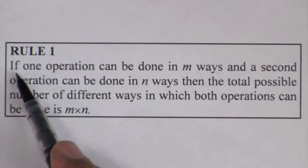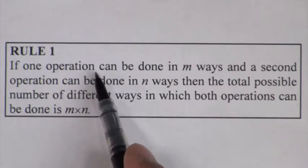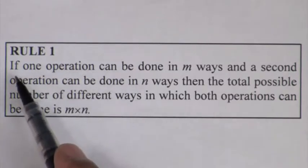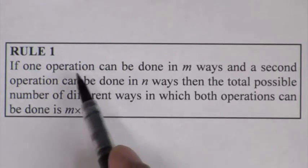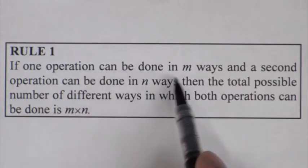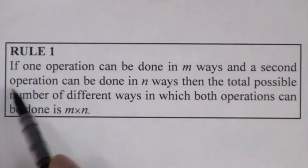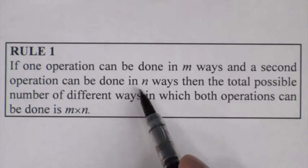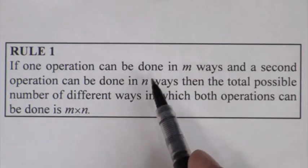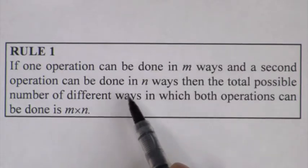I also like to explain it using the term task instead of the word operation. So if one can do a certain task in M different ways and a second task in N different ways, I've got two tasks that I need to perform. The first can be done in M ways, the other one in N different ways.